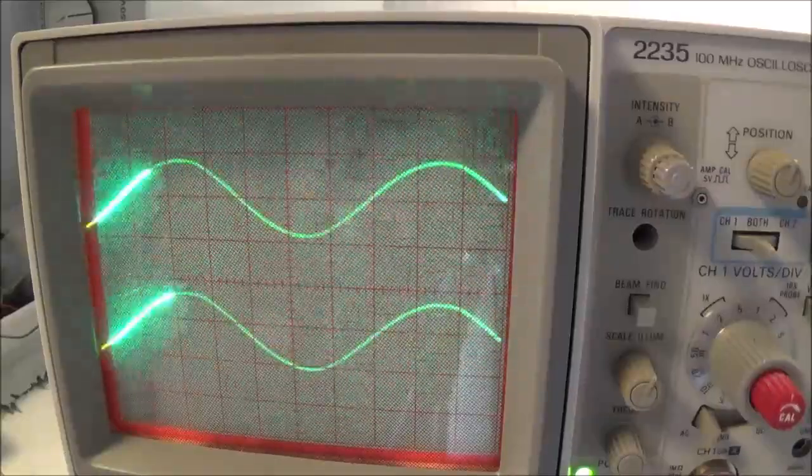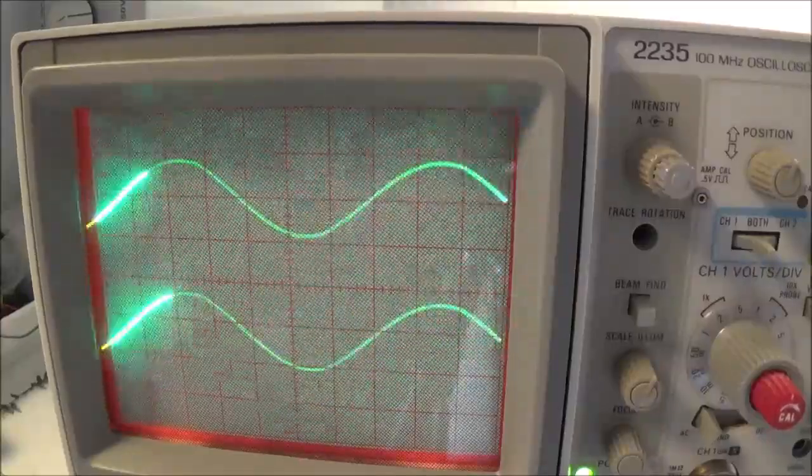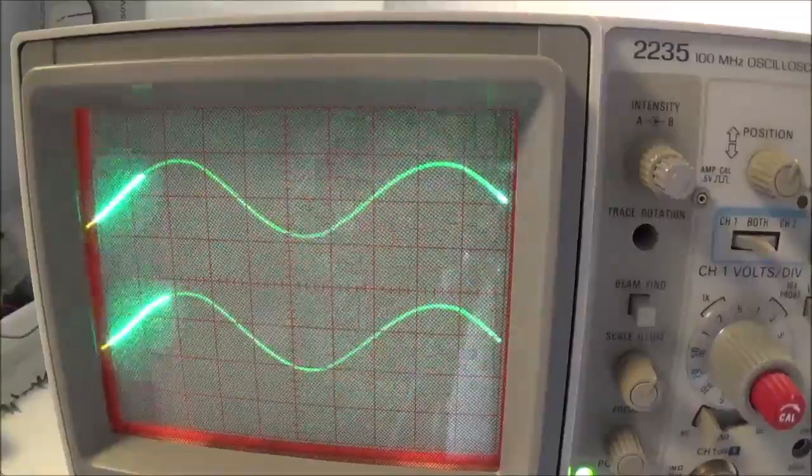What they do is they have electronic circuitry in here that basically simulates having two electron guns, and there's a control on my oscilloscope which is called alt and chop.